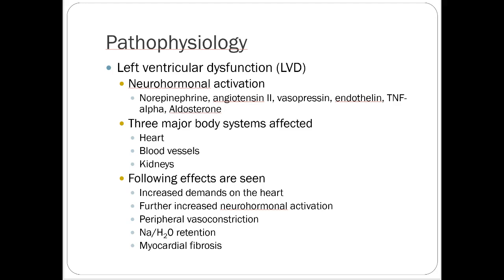In left ventricular dysfunction, we see neurohormonal activation in the form of increases in norepinephrine, angiotensin 2, vasopressin, endothelin, tumor necrosis factor alpha, and aldosterone — all leading to the perfect picture for heart failure. Problems with afterload and preload arise as these hormones manipulate blood vessels. The heart, blood vessels, and kidneys are the three major body systems affected. Increased demands on the heart further increase neurohormonal activation — it's a vicious cycle. You also see peripheral vasoconstriction, sodium retention, and myocardial fibrosis.